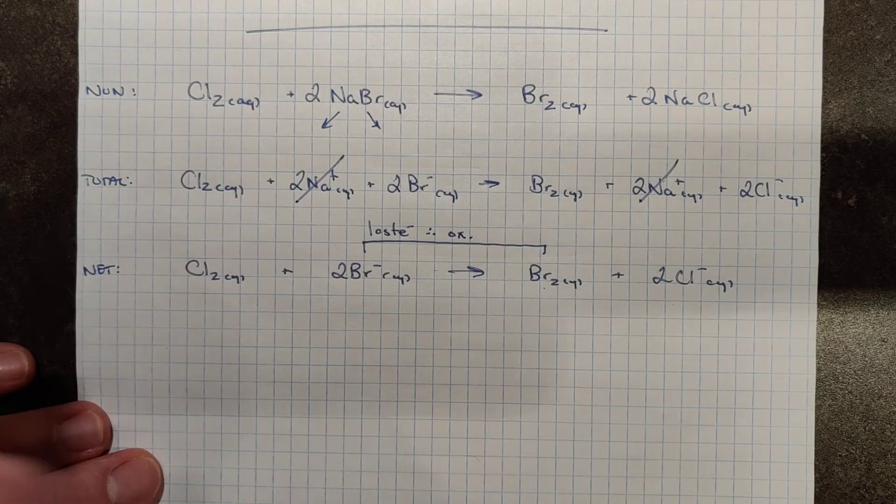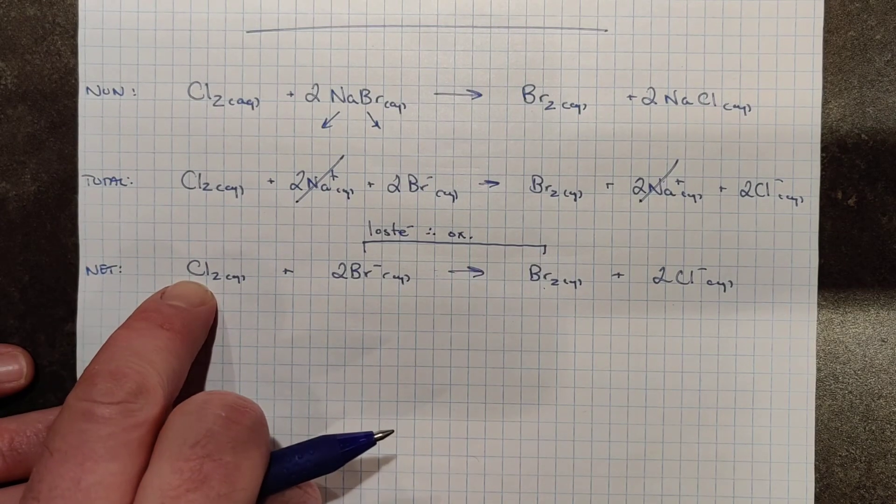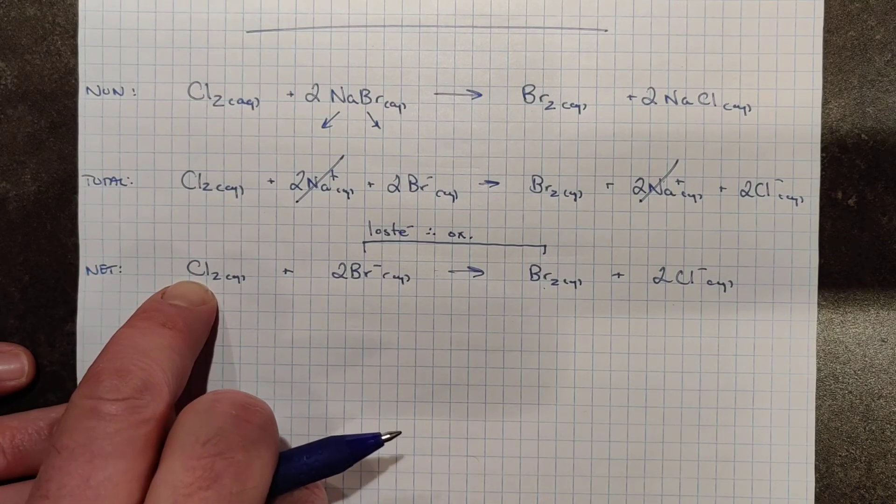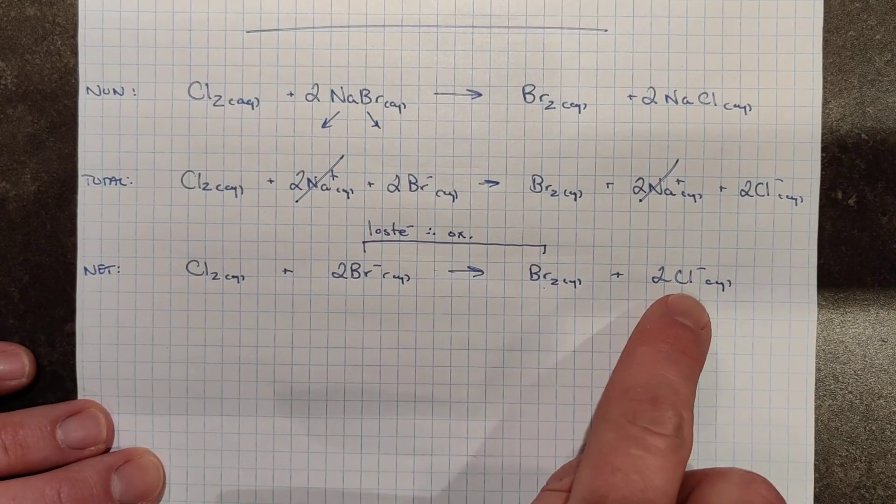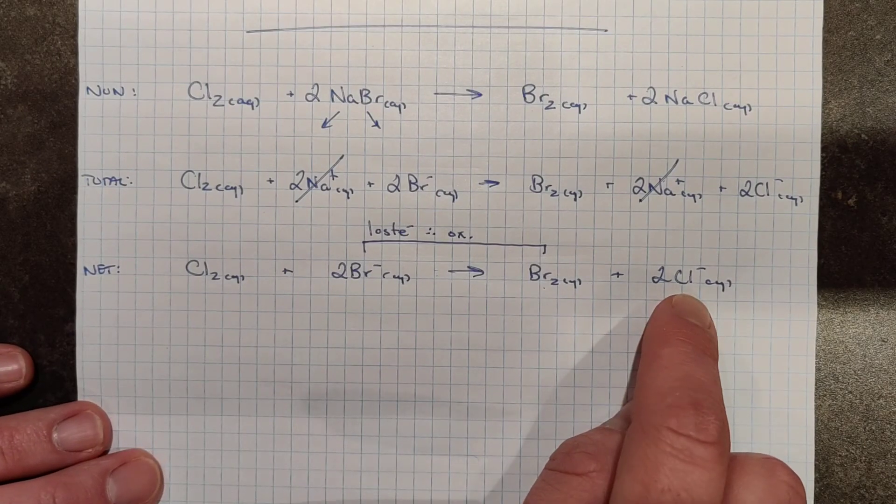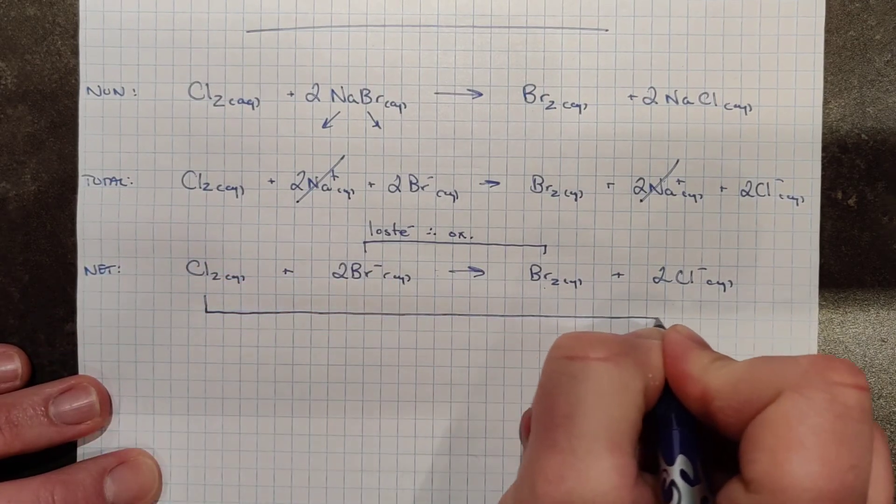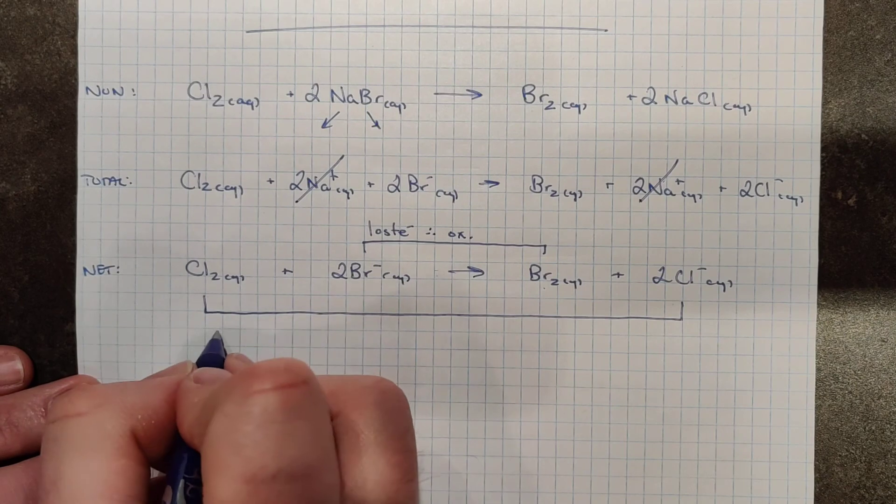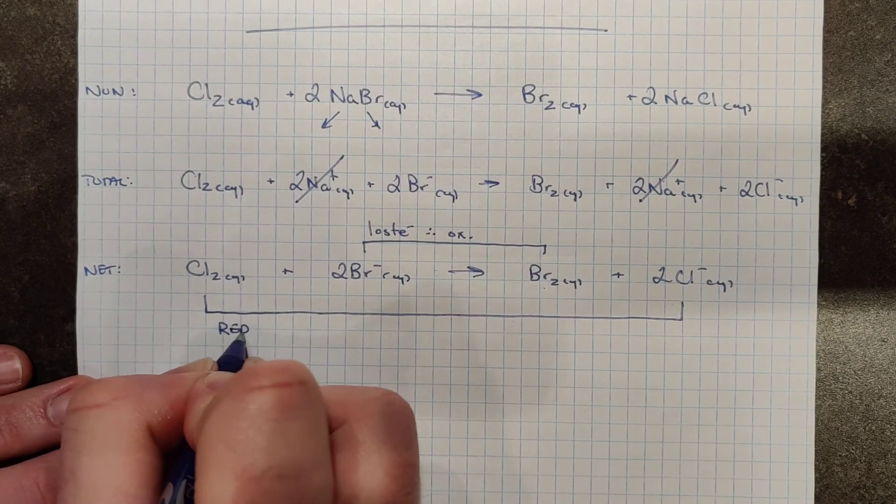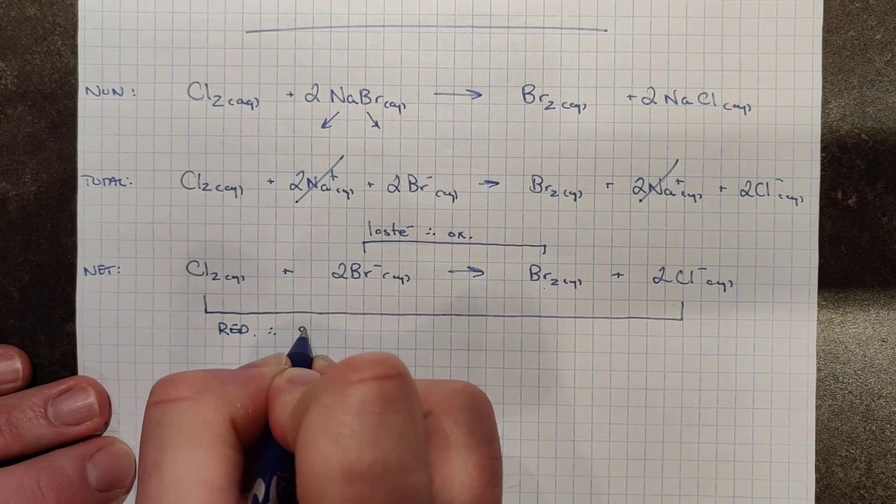Where do those electrons go? Well take a look at chlorine. Chlorine starts as neutral, a balance of electrons and protons, and finishes off as two negatively charged chloride ions which means it has picked up extra electrons somewhere and so chlorine must have undergone reduction because it has gained electrons.